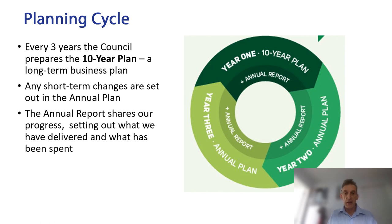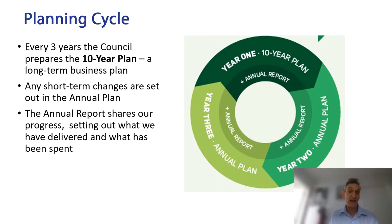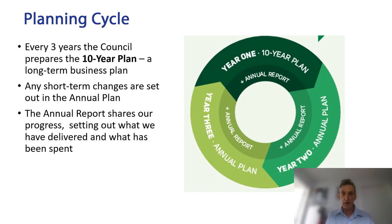This slide shows our planning cycle. Every three years the Council prepares a 10-year plan. Effectively this is a long-term business plan, so it identifies the services the Council intends to provide, the assets the Council intends to build — things like pipes, roads, buildings — new ones but also where we're renewing ones that have reached the end of their life. It works out how much all of that will cost and how it will be funded.